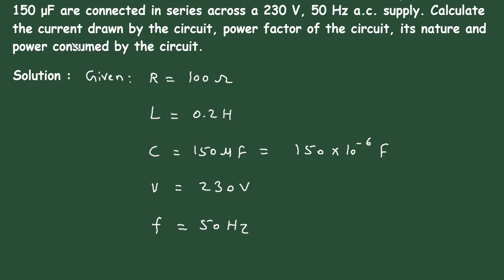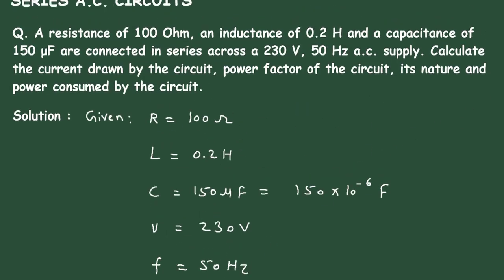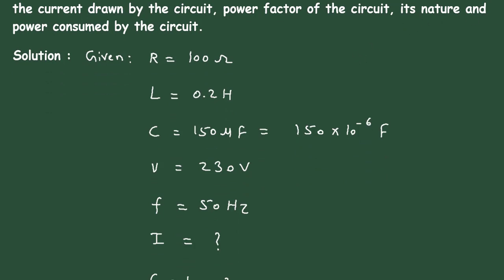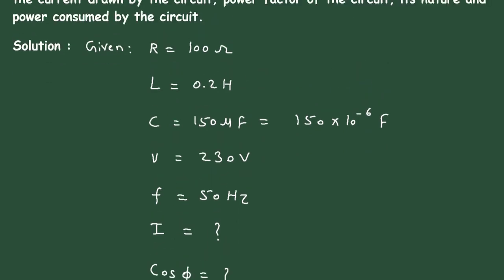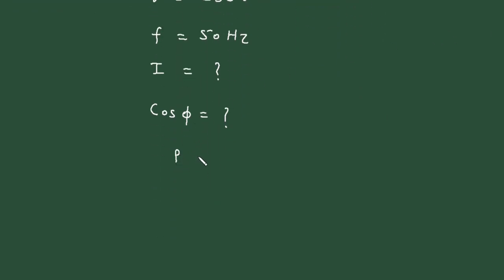What we have to calculate: we have to find the total current I drawn by the circuit, the power factor cos φ, its nature — whether it is leading or lagging — and also the power consumed by the circuit, that is, P.